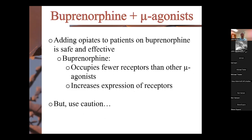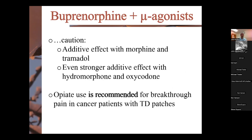To emphasize: adding opiates to patients on buprenorphine is safe and effective. Buprenorphine occupies fewer receptors and increases receptor expression. You can see an additive effect with morphine and tramadol, and even more so with hydromorphone, Dilaudid, or oxycodone — so use caution. There are even recommendations that opiates can be used for breakthrough pain in cancer patients on transdermal patches. Despite any myths you may have heard, you can safely use both in combination with appropriate caution.